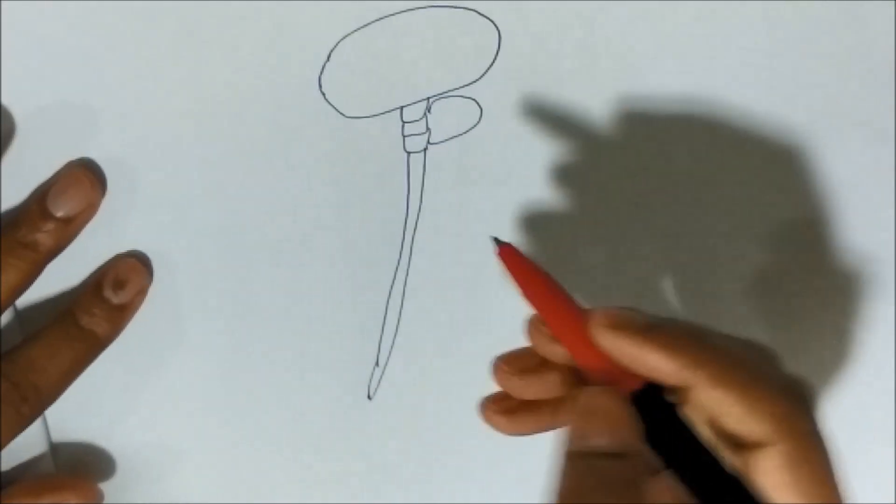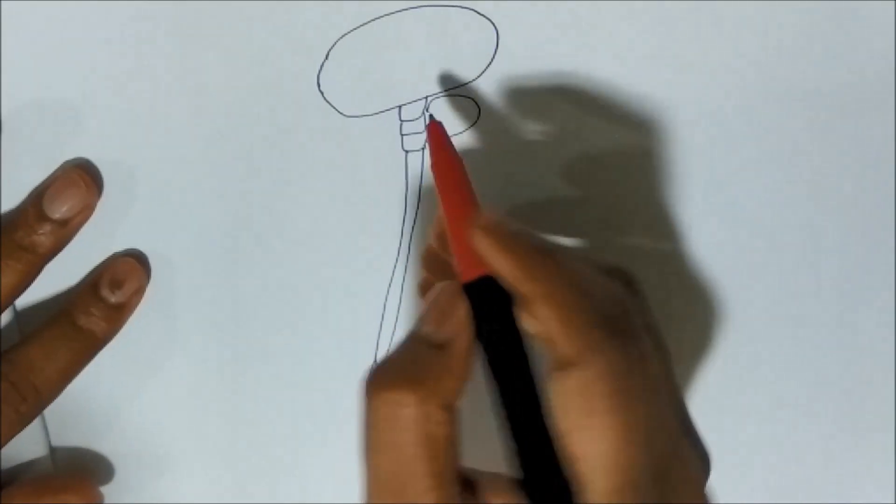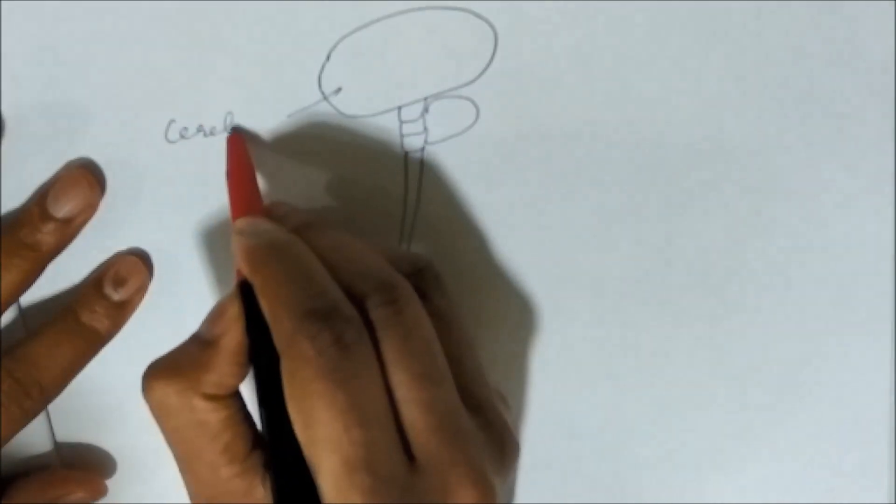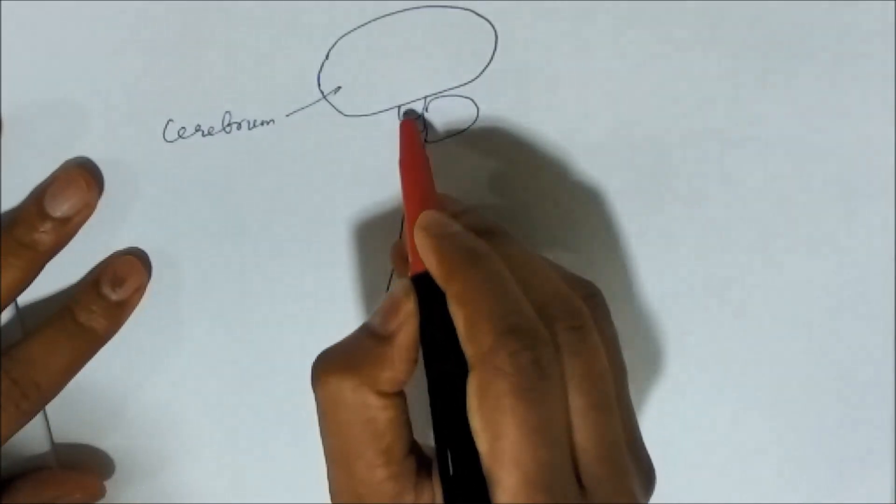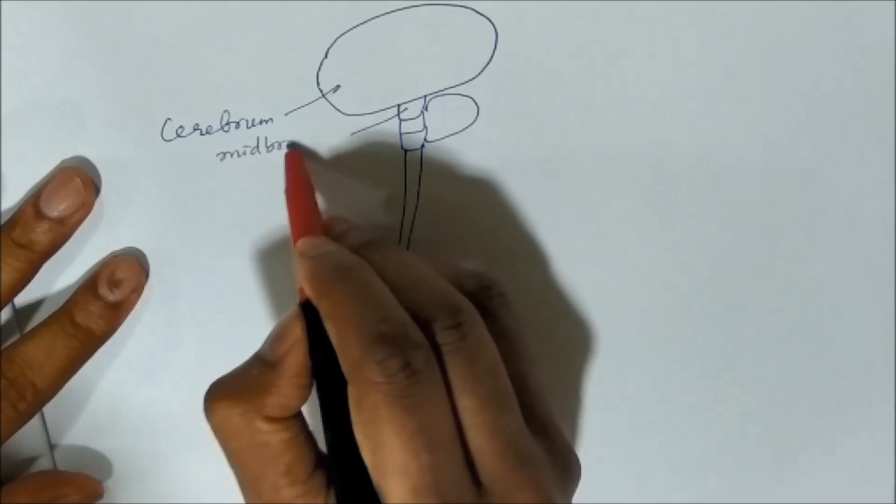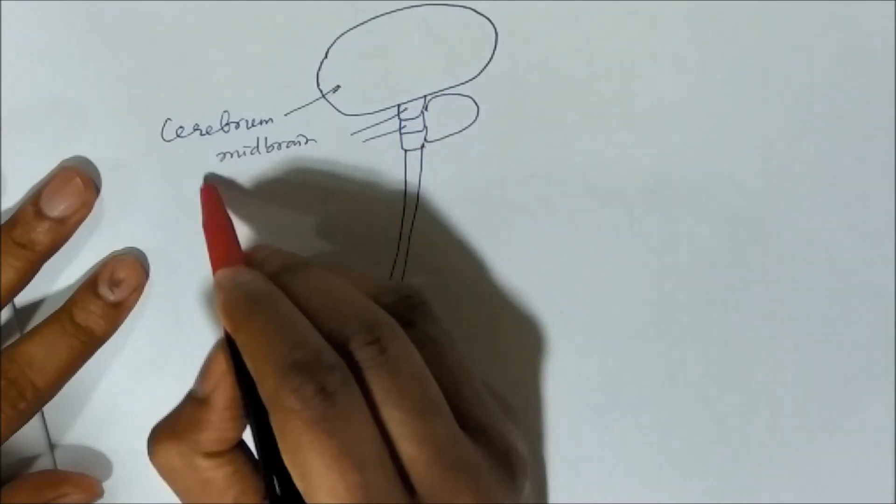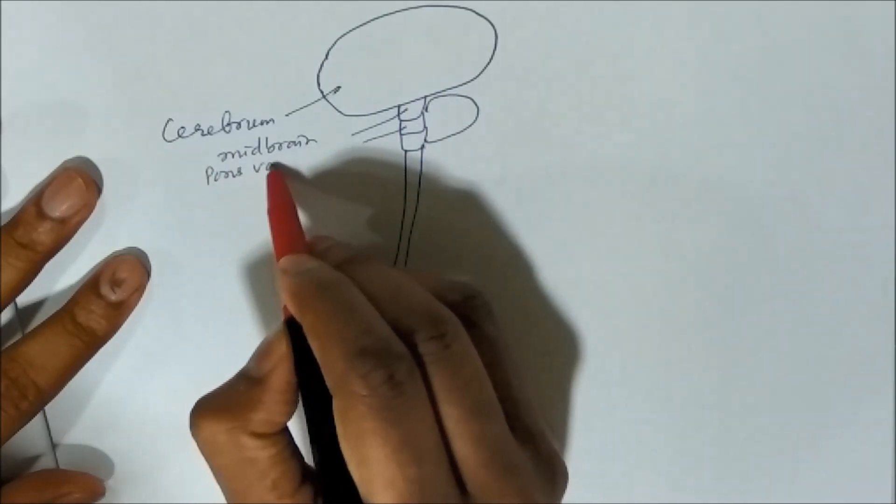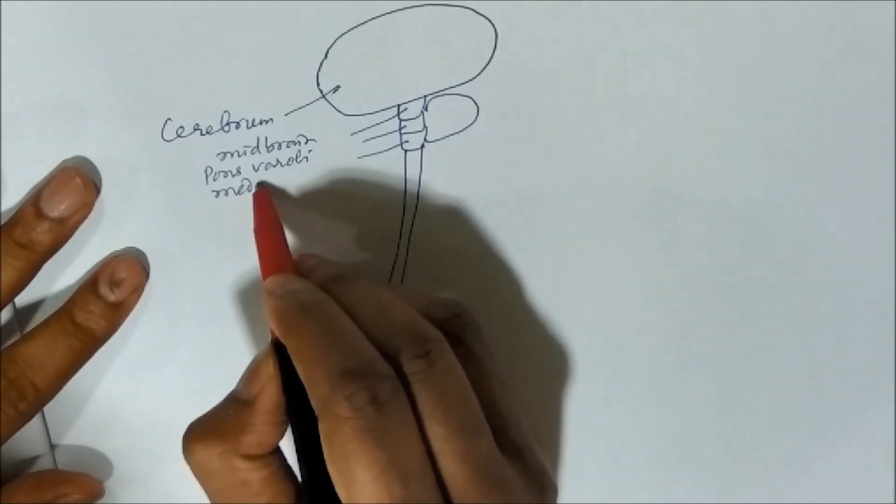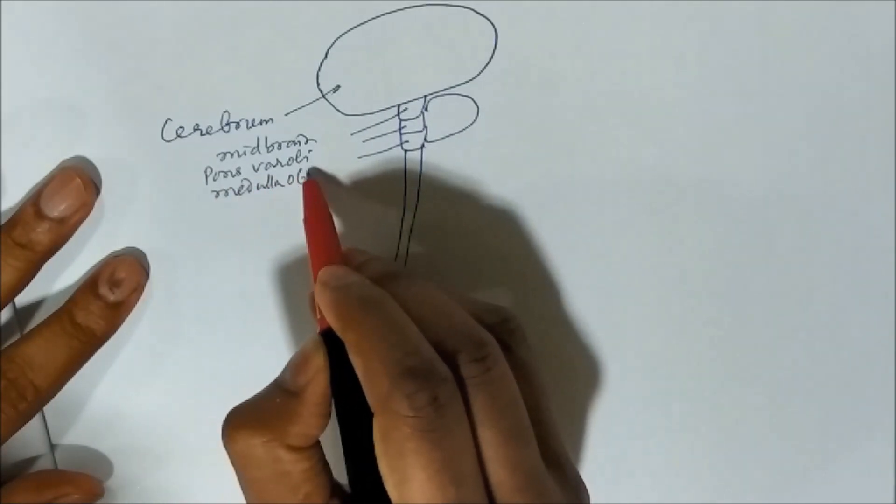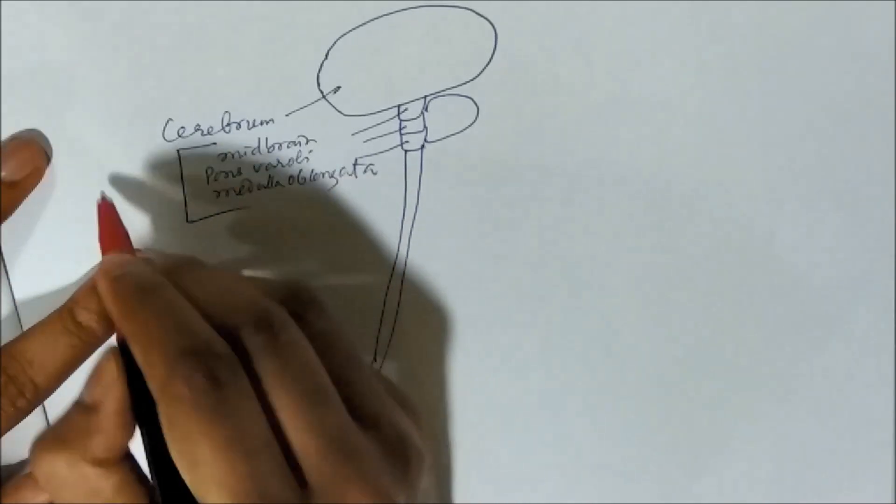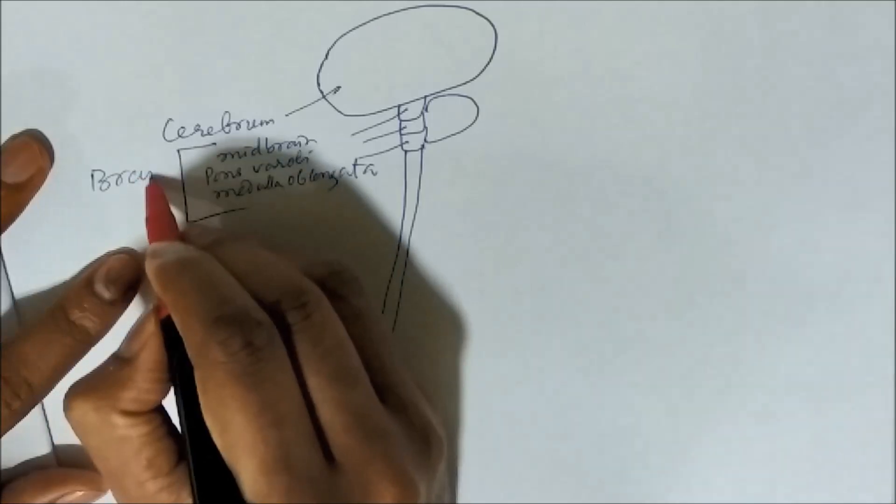So we have the brain and spinal cord. So this is the cerebrum. Then we have midbrain, pons, then medulla oblongata.